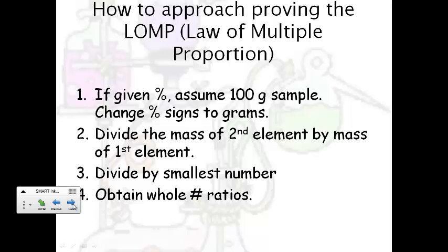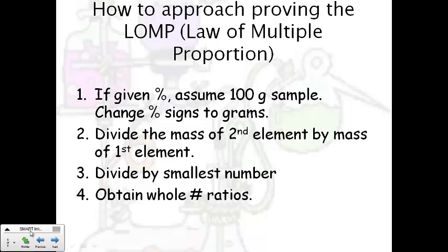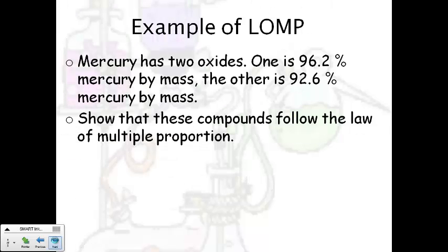Now here's how you want to approach proving the law of multiple proportions step by step. If you're given a percentage, you want to assume that it's a 100 gram sample, and so you'll change your percent signs to grams. And then if you have to subtract to obtain the other portion of the sample, you will. Secondly, you're going to divide the mass of the second element by the mass of the first element. After you get those answers, you divide the smallest of those answers, both of them get divided by that smallest number, and then you obtain whole number ratios. So you see at the end, it gets to be very similar to empirical and molecular formula.